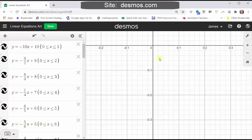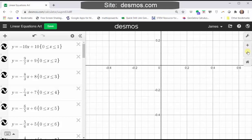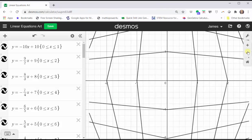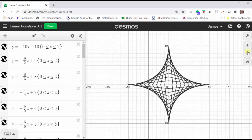As I zoom out, the artwork will appear. And here it is. This artwork has been created by graphing 40 linear equations in slope-intercept form with domain restrictions.